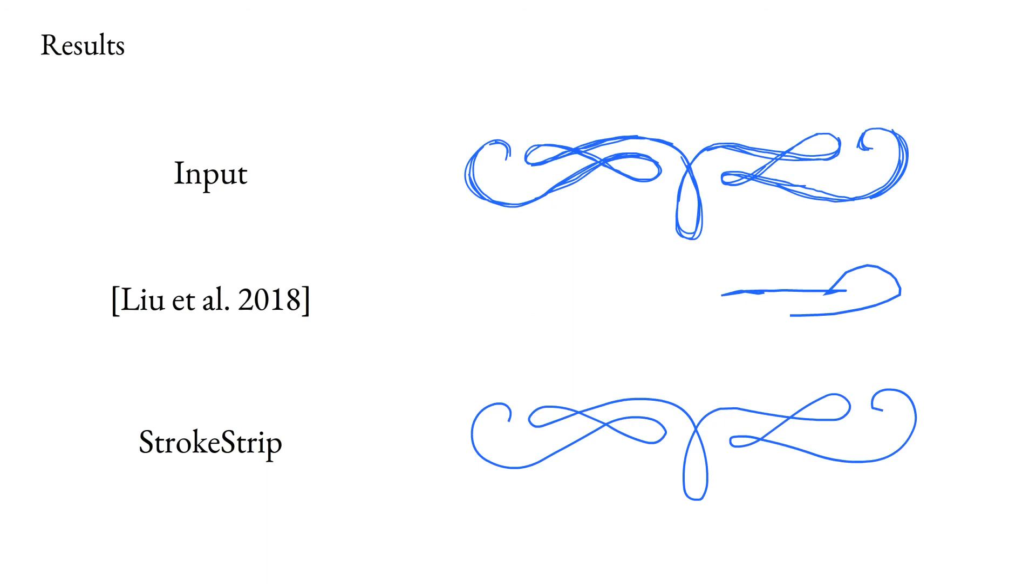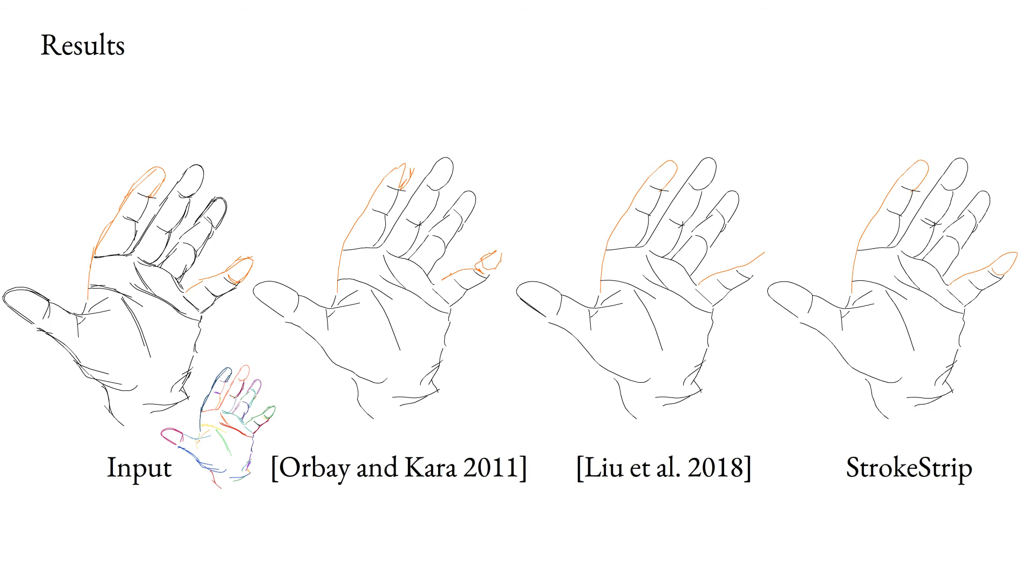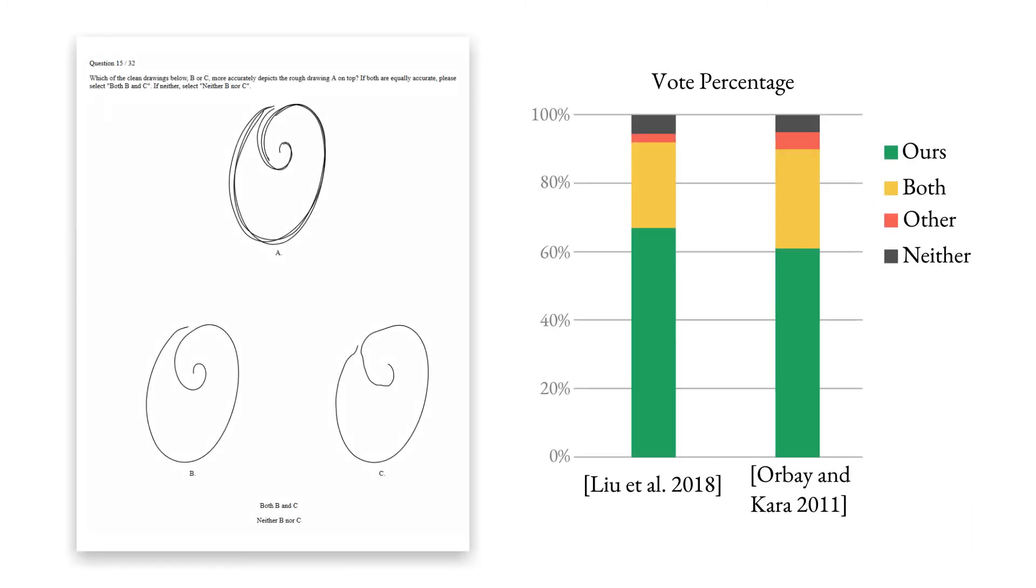StrokeStrip outputs are significantly better aligned with human observer preferences than those produced by prior methods. In our perceptual study, viewers preferred our fitting outputs by a factor of 12 to 1.